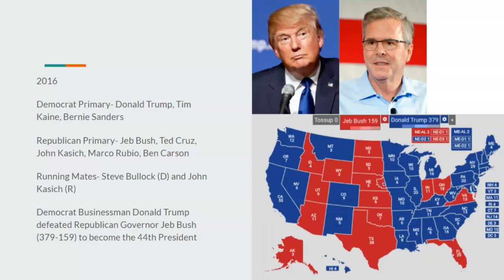In 2016, in the Democrat primary, Donald Trump decides to run — he is still a Democrat in this timeline. Vice President Tim Kaine runs, and Vermont independent Senator Bernie Sanders also runs. Donald Trump outbeats Tim Kaine — it's essentially the populist wing of the Democrat party versus the socialist wing versus the establishment wing, and the populist wing wins out.